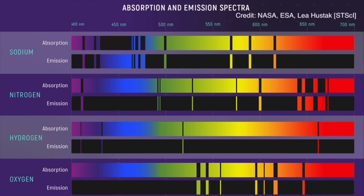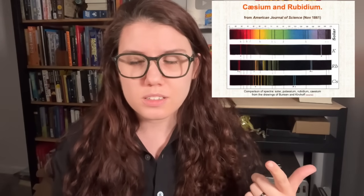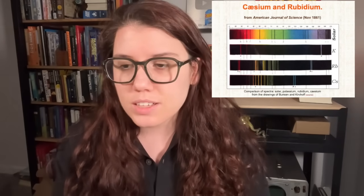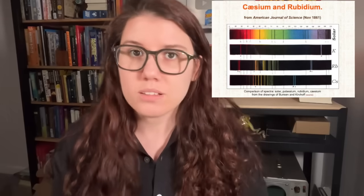Bunsen and Kirchhoff right away noticed that every element they look at has a unique spectra. So if you look at hydrogen versus neon, you can tell what you're looking at. This tool works to identify which element is in gases, and they used it to discover two new elements for the periodic table for the first time: cesium and rubidium. Both are very important to modern physics experiments, but this video is about spectra.